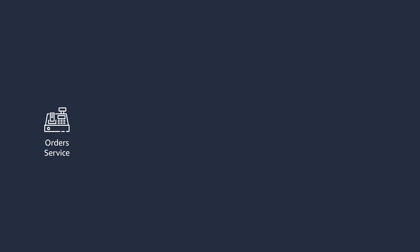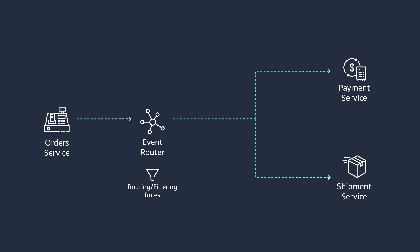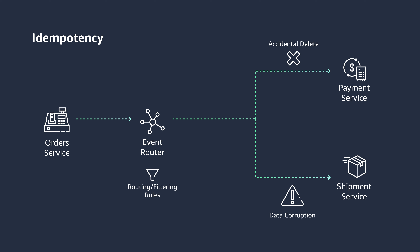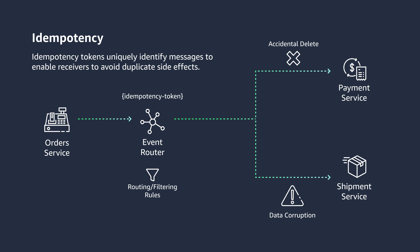One pattern you can use here is the concept of idempotency, which implies that given the same input arguments, a function invocation will only change state on the first invocation. One way to implement this is to create a new unique ID — an idempotency token. If the microservice encounters an identifier it has previously executed, it returns early and doesn't apply any state changes.